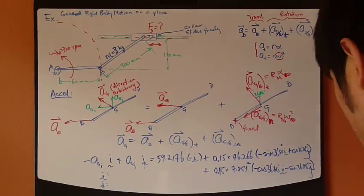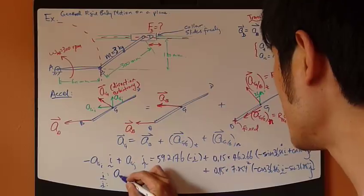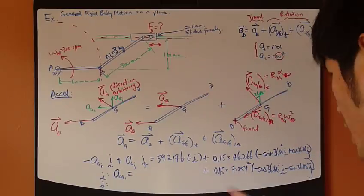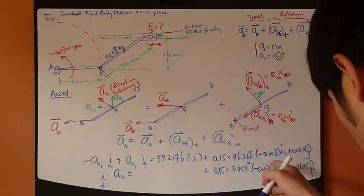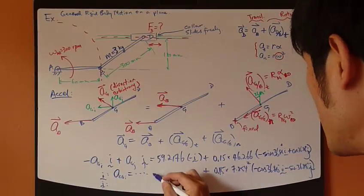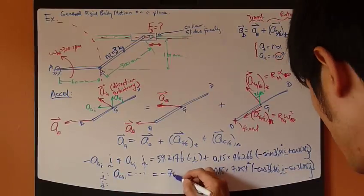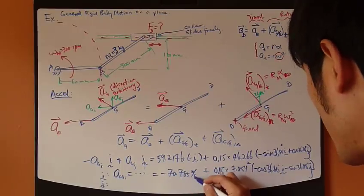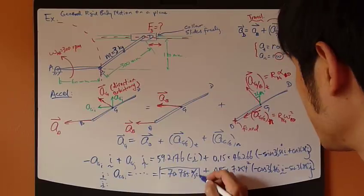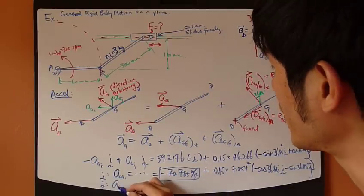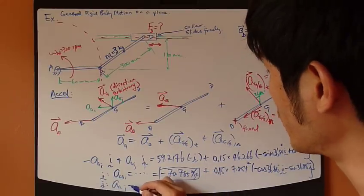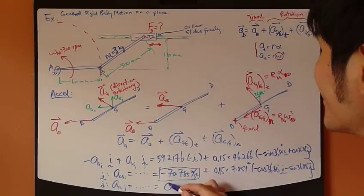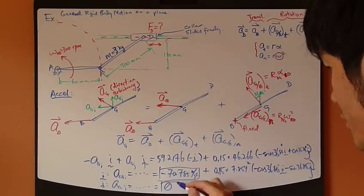And, turns out, my A_G I component equals, plugging all numbers, purely in the I directionally, turns out to be negative 70.75 meter per second squared. Then, A_G J component, you go through the math, turns out, it's zero.